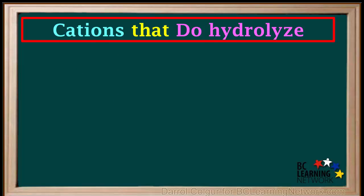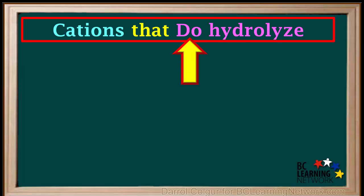Now that we've seen which cations do not hydrolyze, we'll now look at cations that do hydrolyze, or undergo hydrolysis. In chemistry 12, the cations that are recognized as hydrolyzing are these four.